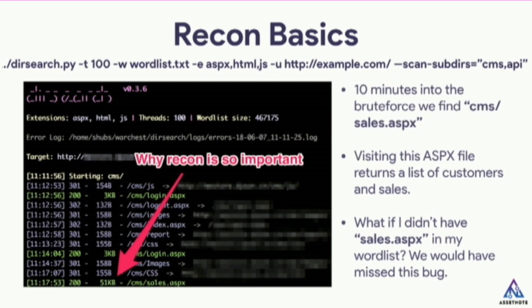This is an example: DirSearch with a basic word list, looking for ASPX, HTML, JS extensions, and also including subdirectories of CMS and API. It takes 10 minutes into the brute force and we find sales.aspx, and visiting this file returns a list of customers and sales — a sensitive information disclosure. But what would happen if we didn't find that? If sales.aspx wasn't in our word list, we would have missed this bug. So obviously the quality of your word list is really important for the quality of your recon and, by extension, your pen test.